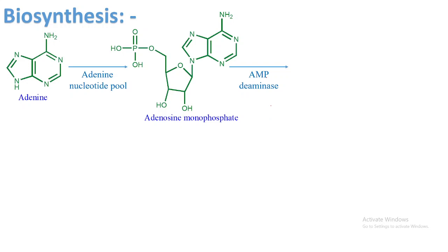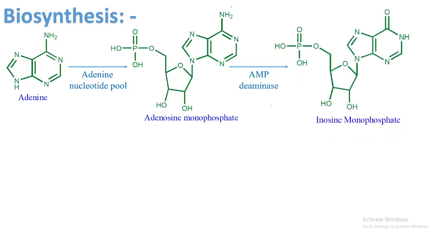Next, the enzyme AMP deaminase cleaves off the amine group at position number six of AMP and introduces a keto functional group in its place. This reaction is carried out by the enzyme AMP deaminase, and the new molecule formed is called inosine monophosphate (IMP).